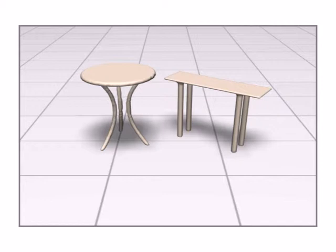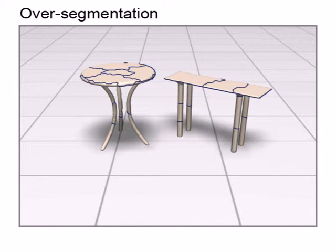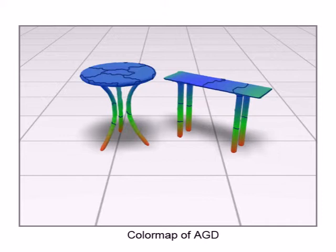First, we perform an over-segmentation on these meshes. We choose 5 types of feature descriptors to analyze parts among the shapes.